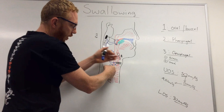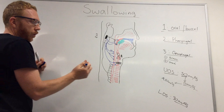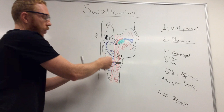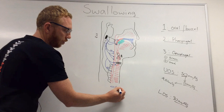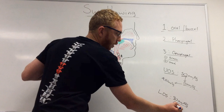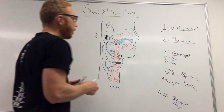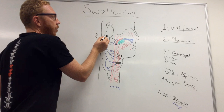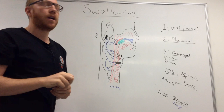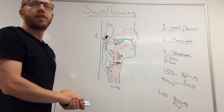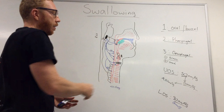At the lower esophageal sphincter, resting pressure is 30 mmHg, preventing acid reflux back up. As the bolus approaches, an inhibitory signal drops the pressure to zero to allow passage, then it returns to 30 mmHg to close off again. Additionally, as the swallowing reflex occurs, an inhibitory signal is sent to the respiratory center, essentially turning off breathing for the six to eight seconds of swallowing; once complete, airflow resumes.